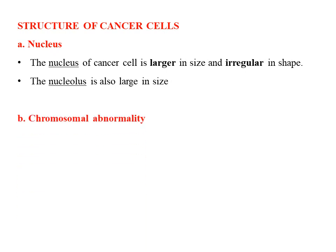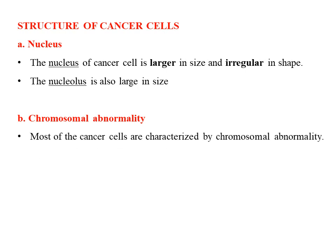Coming to chromosomal abnormalities: cancer cells generally gain multiple types of chromosomal abnormalities during the tumor progression process. These include deletion, duplication, and even rearrangements. As a result, the genome becomes progressively more unstable. This is due to the abnormal mitosis occurring in cancer cells.